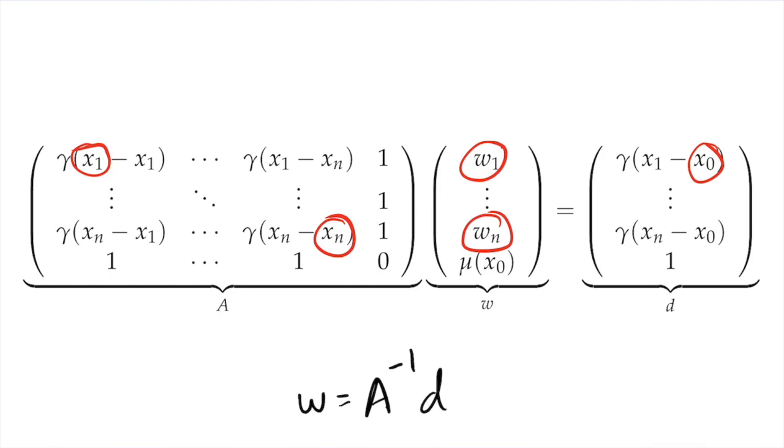Finally, there are some computational aspects that you need to take into account if you use kriging. Matrices w and d here are just vectors, but matrix A is square, and it can be very big if you use a large search radius. Since inverting a matrix is computationally expensive and this has to be done once for every interpolated point, kriging can be much slower than other interpolation methods. So, try to use a relatively smart search radius, but this radius should still always contain other sample points.